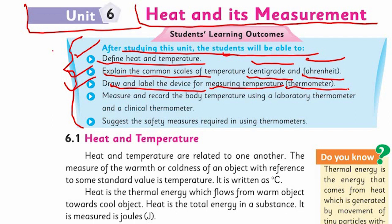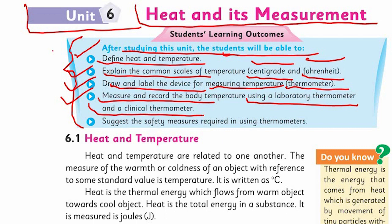I will show you different kinds of thermometers today and you will love it and enjoy it. SLO number 4 is to measure and record the body temperature using a laboratory thermometer and a clinical thermometer — these two kinds of thermometers we will discuss in this chapter. SLO number 5 is to suggest the safety measures required in using thermometers.